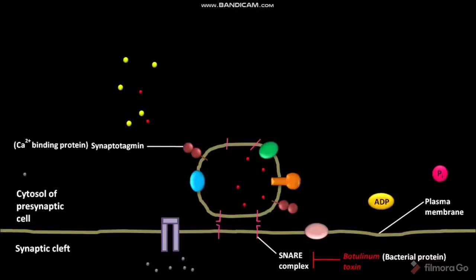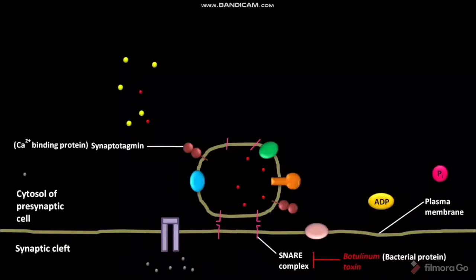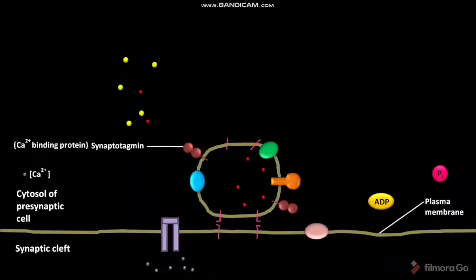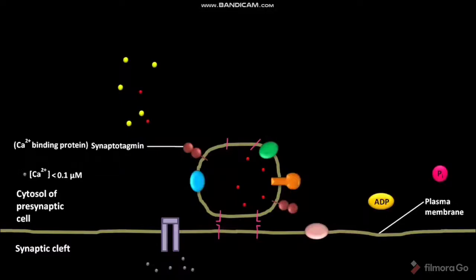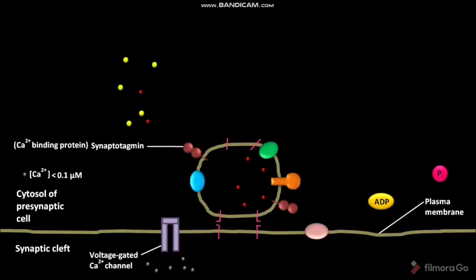Before the arrival of an action potential at the axon terminus, the cytosolic Ca2+ ion concentration is less than 0.1 micromolar. The plasma membrane of the presynaptic cell has voltage-gated Ca2+ channels. Whenever an action potential arrives at the axon terminus, the voltage-gated Ca2+ channel opens. The Ca2+ ions present in the synaptic cleft then pass through the opened voltage-gated Ca2+ channel into the cytosol of the presynaptic cell. As a result, the cytosolic Ca2+ ion concentration changes to 1 to 100 micromolar.